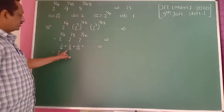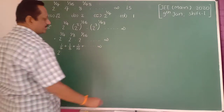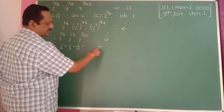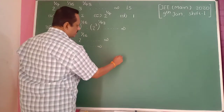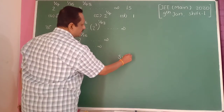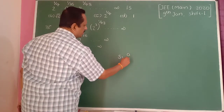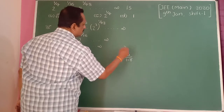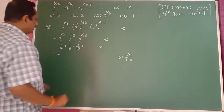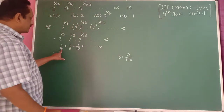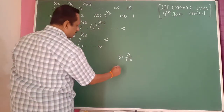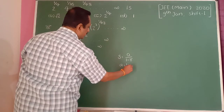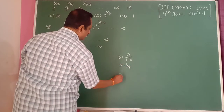These terms are in GP. Therefore, sum to infinity of a GP is given by a divided by 1 minus r. In this case, the first term a is equal to 1/4.